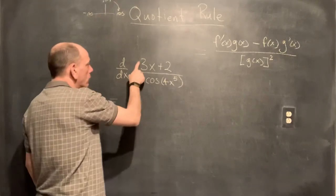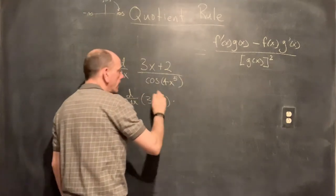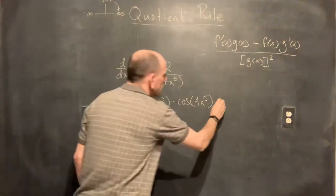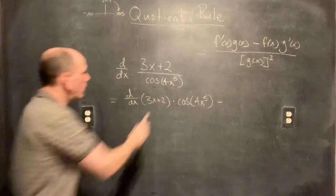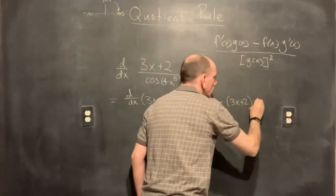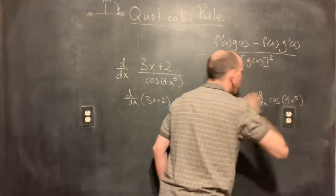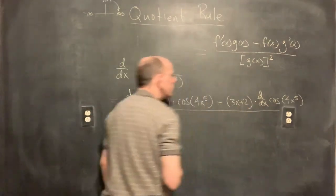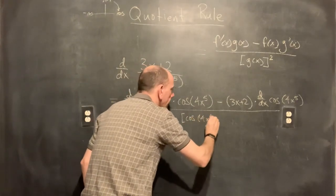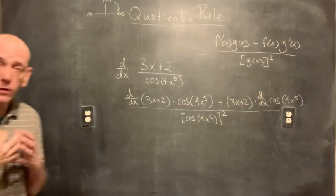Applying the quotient rule: derivative of the numerator, d/dx[3x + 2], times the denominator cos(4x⁵), minus the numerator (3x + 2) times the derivative of the denominator, d/dx[cos(4x⁵)], all over the denominator squared: [cos(4x⁵)]². We've applied the formula; now we compute the actual derivatives.